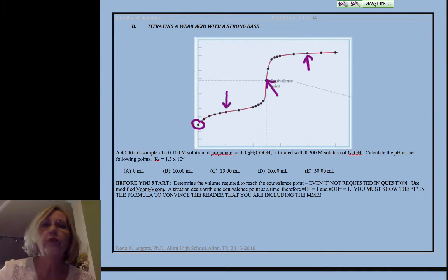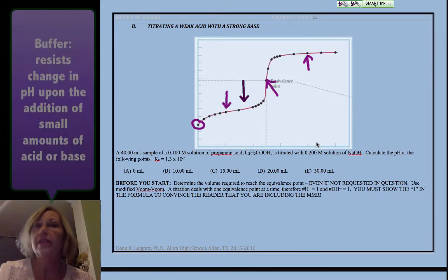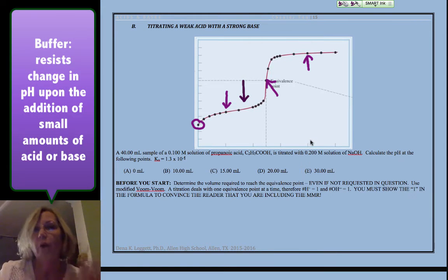To round it out nicely, I picked a point in the middle that helps us see the buffer zone. A buffer resists changes in pH upon the addition of small amounts of acid or base, and you notice how flat it is along here because it's resisting change in pH.